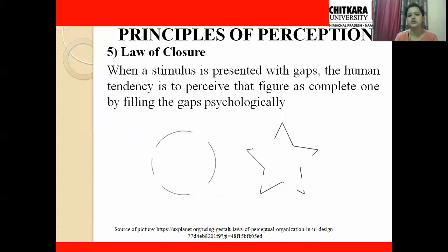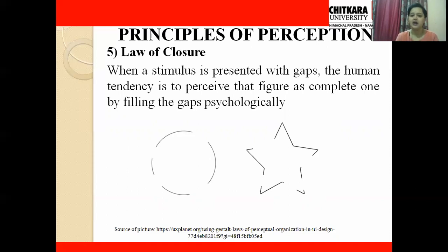Next is the law of closure. It states that when a stimulus is presented with gaps, the human tendency is to perceive that figure as a complete one by filling the gaps psychologically. Our brain already has the idea that a shape is a circle or a star. When our eyes send the information to the brain, the brain — drawing on its pre-existing knowledge — psychologically fills all the gaps and we perceive the figure as a whole, not as parts. That is the law of closure.